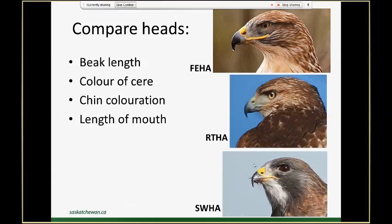In a Ferruginous hawk we have a really big beak — a long beak that extends very far out that you can actually see as a big beak even in silhouette if the bird's under shadow. Red-tails have a medium length beak, and Ferruginous hawks have that small insectivorous beak that is distinctive even in silhouette.